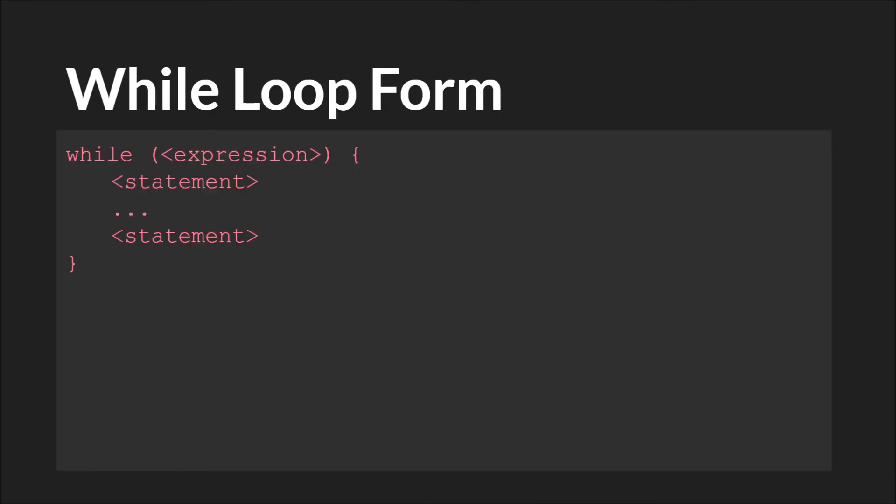The while loop has the following form. It starts with while, and then it has an expression. Again, this expression will be evaluated the same way it would in an if statement. It's looking for true or false. And if it is true, then the code inside this block will run.